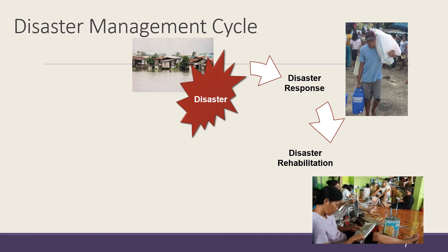Build Back Better is the mantra from this phase onward. How do we rebuild the lives, livelihoods, and facilities? Several activities on recovery and rehabilitation already happen even before the disaster response phase ends, so the distinction is not necessarily clear-cut. Actions on restoring livelihoods, rebuilding houses, and community facilities are some of the activities involved. A critical component is to identify and prioritize what needs to be rebuilt.